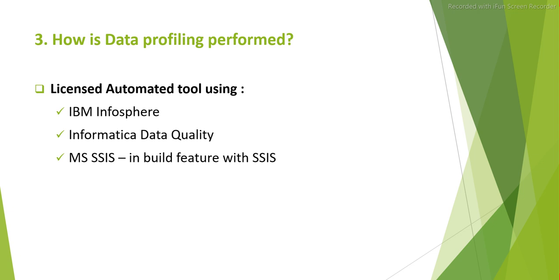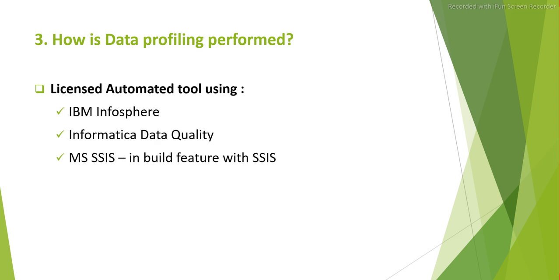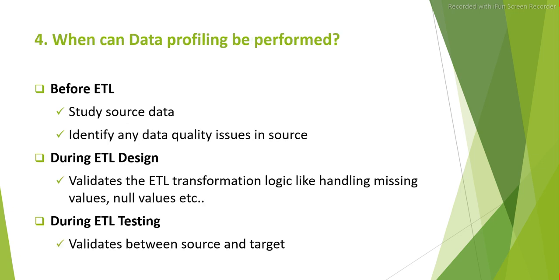The third approach is licensed automated tools, but companies generally don't prefer these because they are very costly. Tools like IBM InfoSphere and Informatica Data Quality are really expensive. Only top-tier companies can afford them. Most people either go with manual checking or build a custom automated test framework that includes data profiling.